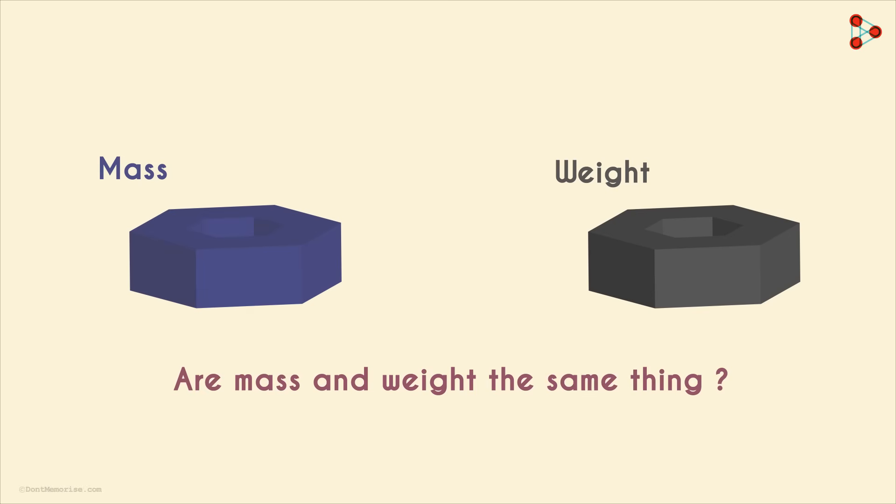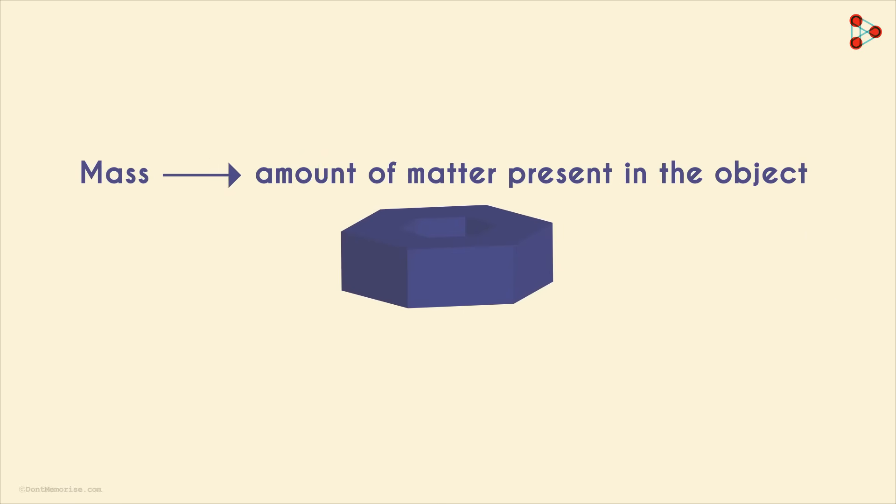There is a very simple way to understand the difference. Mass is simply the amount of matter that is present in the object.